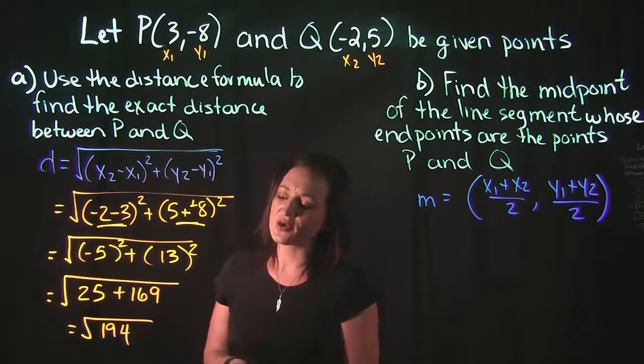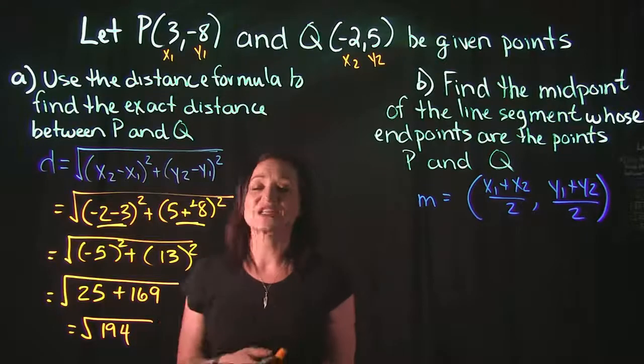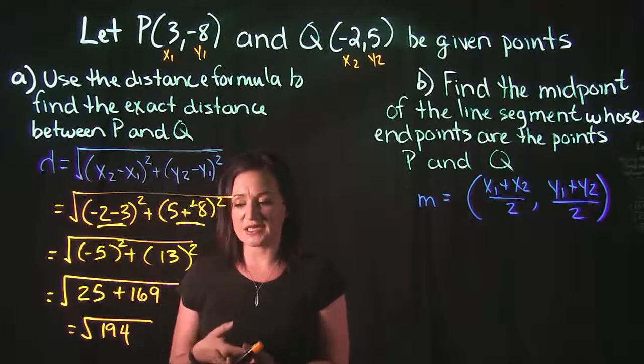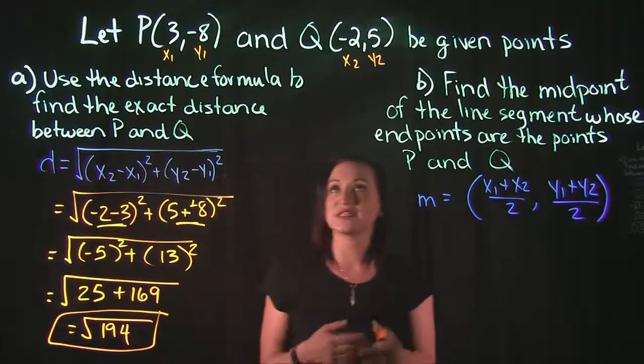We're left with the square root of 194, which actually can't be simplified. If you want to go ahead and plug that into your calculator to get an idea of what that equals, but your exact distance is going to be the square root of 194. So that's the distance between these two points.